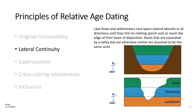The second is the principle of lateral continuity. When deposited, sedimentary rock layers and lava flows extend laterally in all directions until they either thin to nothing or reach the edge of the basin that they're deposited in. If you see rock layers that are separated by a valley but otherwise look similar, you can assume they are the same layers.